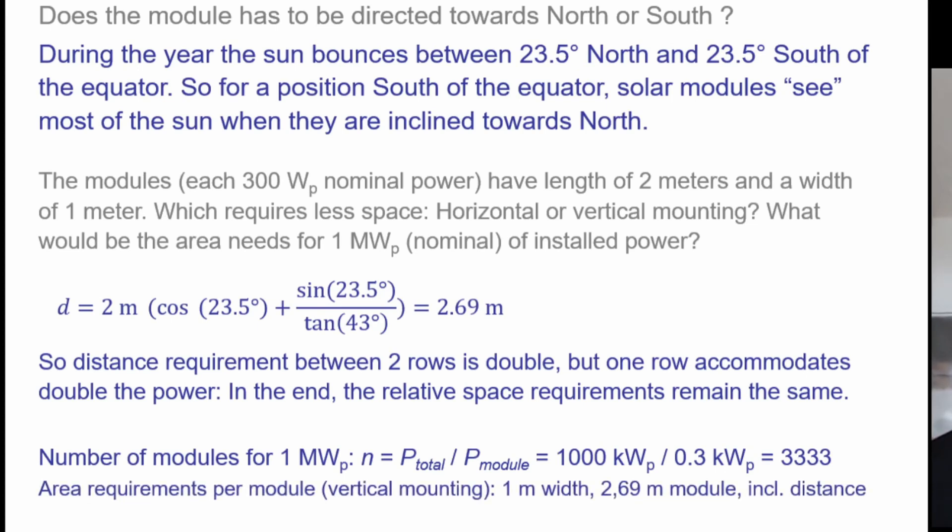And then we have the area requirement. So we have a width of 1 meter and the distance 2.69 meters, including distance. Then we need 8,965.77 square meters.